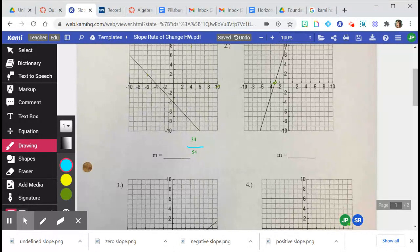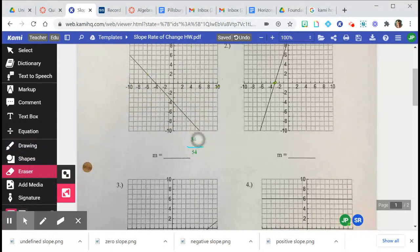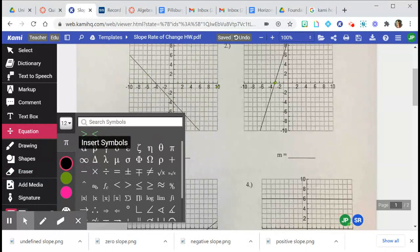There is an equation button that does have some symbols like less than or equal to, greater than or equal to. It has some different symbols. It has pi so we can get pi. It does have some of the symbols that we'll be using for other things later on down this trimester.